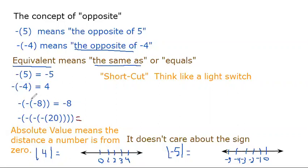When you have multiple parentheses, you start on the inside. I see a negative 8 — take the opposite of a negative 8, which turns it into a positive 8. Then take the opposite of a positive 8, which turns it into a negative 8. So if there's more than one set of parentheses, you work from the inside out.